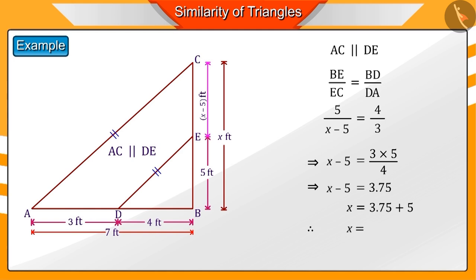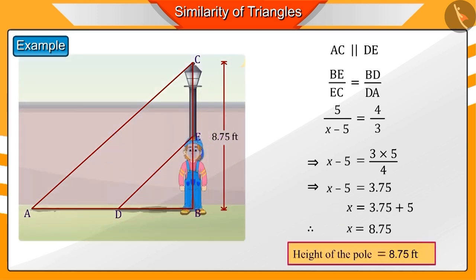Substituting this value of DA we get x is equal to 8.75. Therefore the height of the pole would be 8.75 feet. In this example you saw how we can use the basic proportionality theorem in our day-to-day life as well.